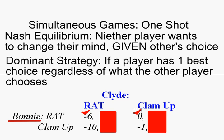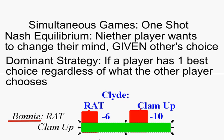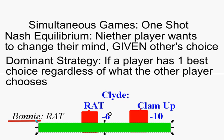Now let's see if Clyde has a dominant strategy. I've switched the boxes to cover up Bonnie's numbers so we don't get distracted. We also want to cover up one row at a time — a helpful way to look for Nash equilibria and dominant strategies. We're asking Clyde: what's your best choice if you think Bonnie rats? We cover up the bottom row and focus on the six years Clyde gets if he rats versus ten if he stays quiet. Clyde says his best choice would be to rat, since he'd rather go to jail for six years than ten. So we put a check mark on Clyde.